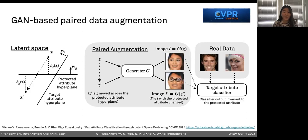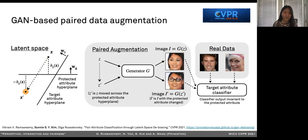Specifically, we learn hyperplanes in the GAN latent space that separates the attributes. Then, for each randomly sampled latent vector z, we perturb it to z prime, which has the same target attribute score but the opposite protected attribute score.